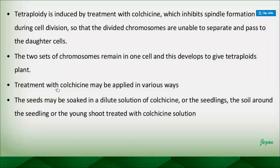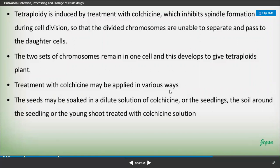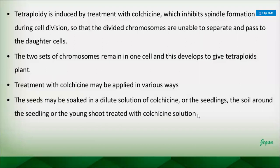Treatment with colchicine may be applied in various ways. The seeds may be soaked in a dilute solution of colchicine, or the soil around the seedling or the young shoots may be treated with colchicine solution. Ultimately, the goal is to introduce colchicine — the agent that initiates cell division in the proper pattern.